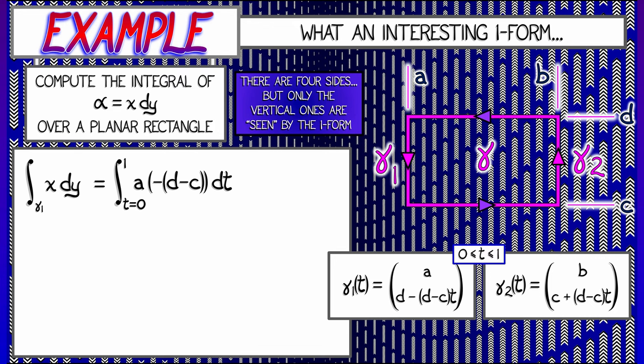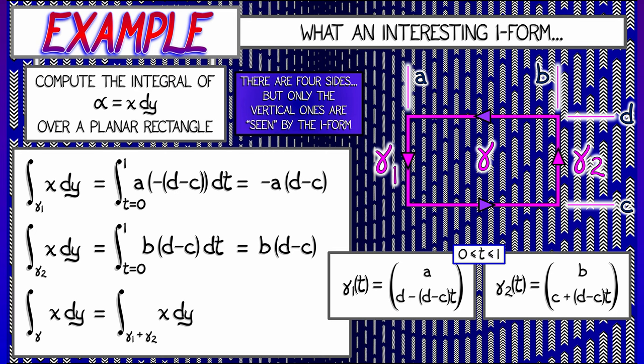Gamma 1 of t is going to be given by a for the x-coordinate and d minus quantity d minus c times t. Likewise, gamma 2 is going to be b for the x-coordinate. And then, to get the orientation right on the y-coordinate, we do c plus quantity d minus c times t. Okay, now that we've got that, we can plug this into the integral for x dy. If we integrate first over gamma 1, we're integrating a for x times minus quantity d minus c dt for dy. And then, integrating this with respect to t as t goes from 0 to 1. That is simply minus a times quantity d minus c. To integrate over gamma 2, I plug in b for x, and then for dy, I have quantity d minus c times dt. That integral, as t goes from 0 to 1, is simply b times quantity d minus c. And so, we see that the integral over this entire rectangular path is the sum of these two, which factors as quantity b minus a times d minus c.